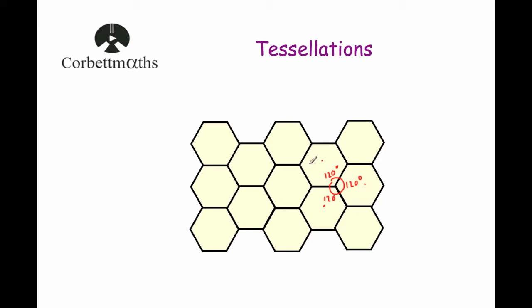Other shapes like regular pentagons where the angles are 108 degrees, they don't tessellate because whenever you try to put together the 108 degrees, you can't make 360 degrees out of those and they just wouldn't tessellate.